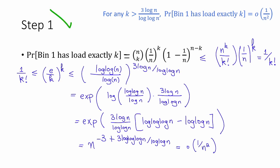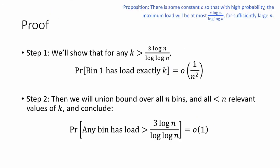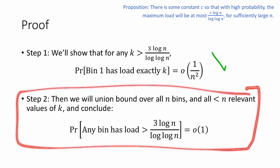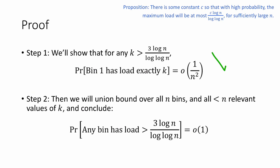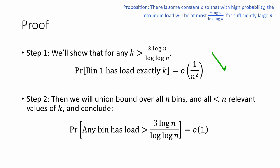We've now completed step 1, so it's time for step 2. Step 2 doesn't need any extra proving — we simply take a union bound over n² things, and conclude that the probability any bin has load bigger than 3 log n / log log n is little-o of 1, which is teeny tiny.